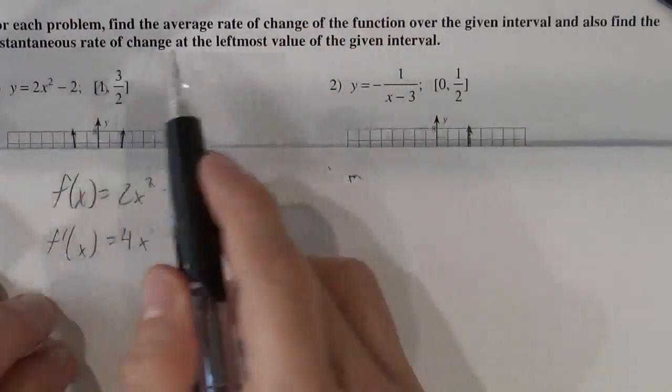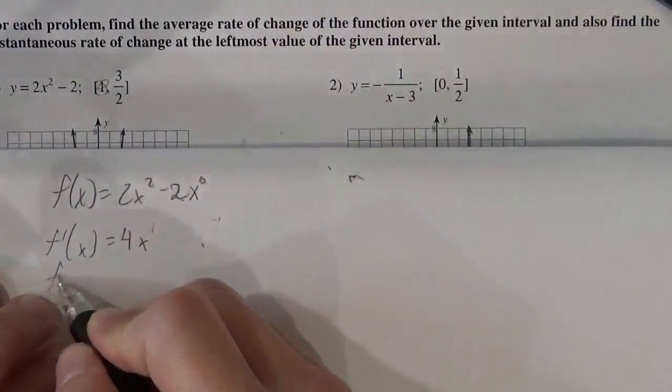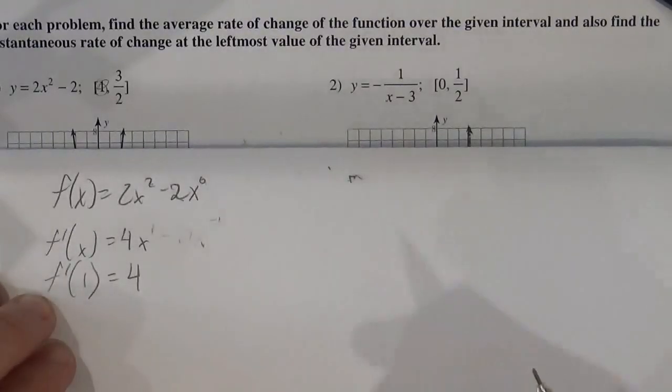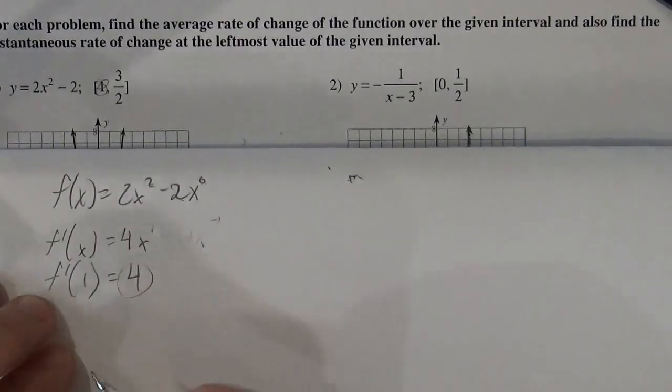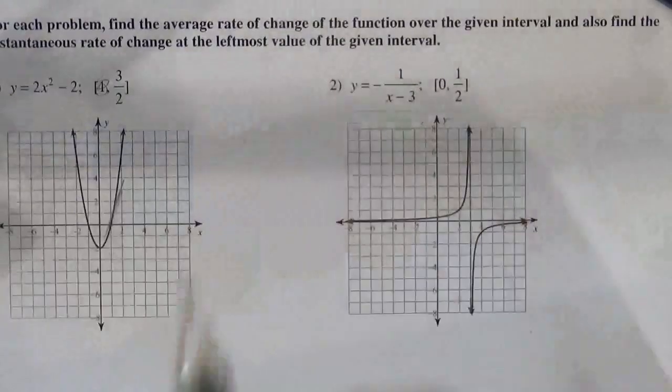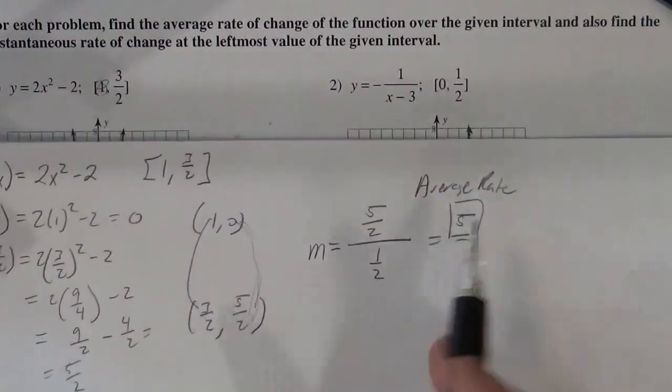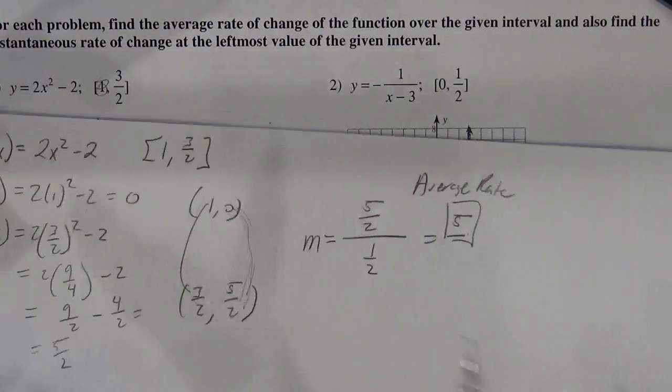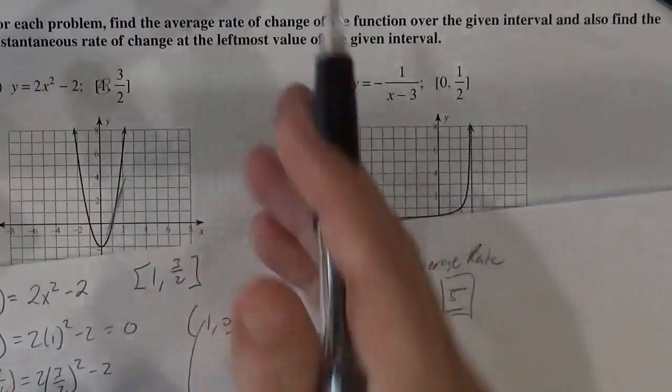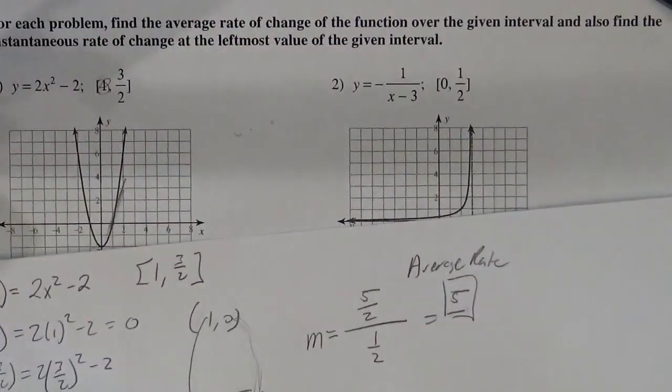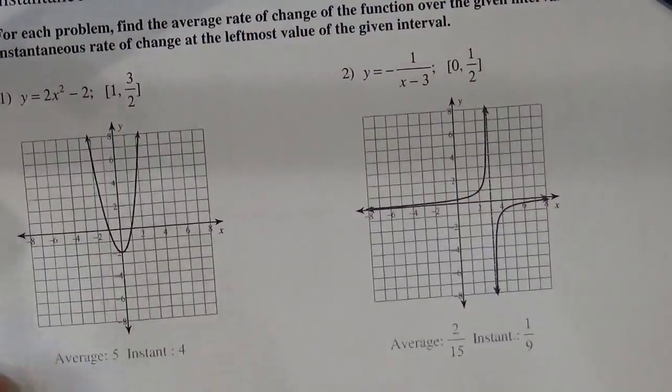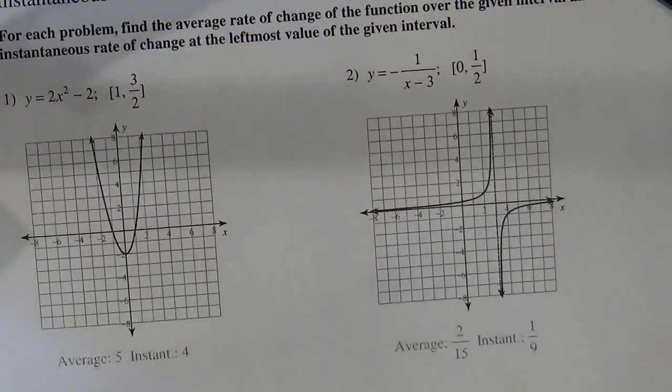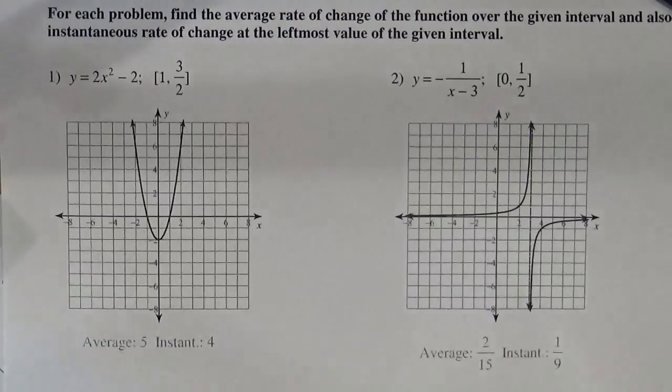And then we want it at 1. So f prime of 1 is 4. So that is our instantaneous rate of change as 4. And our average rate of change was 5. So they're kind of close. I mean, when it gets that steep, it's hard to tell. We can match it. Average rate of change was 5, instantaneous rate of change was 4. We match. Excellent.